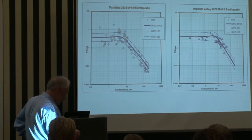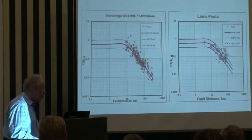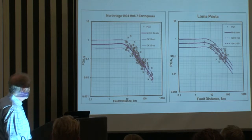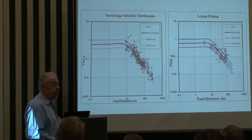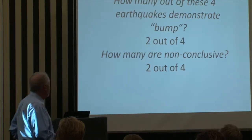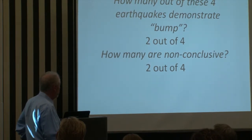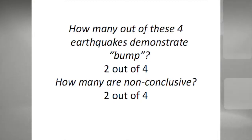These are the two well-recorded earthquakes: Imperial Valley and Parkfield. Now let's go to the two others, which are not as well-recorded but also more or less okay. I would not say that they confirm the bump, but they definitely don't eliminate the idea of the bump. In summary, two out of four well-recorded earthquakes demonstrate the bump — that's our opinion — and another two are not conclusive.